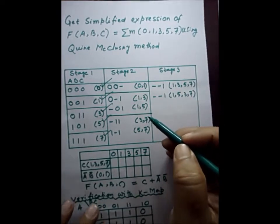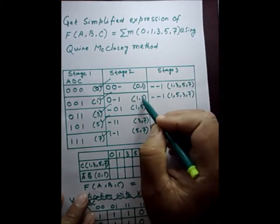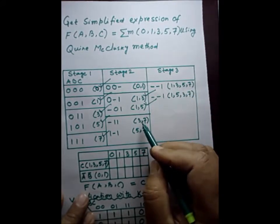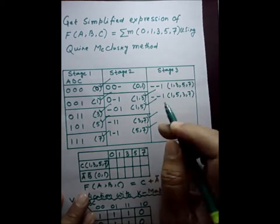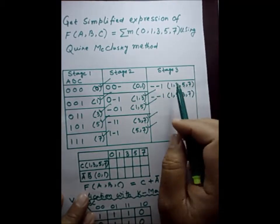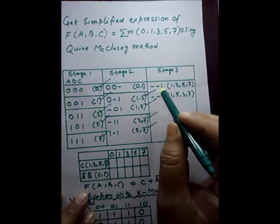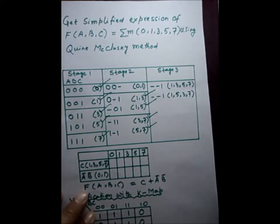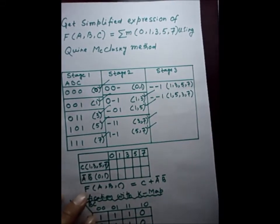Now we check what numbers have been used and tick them. 1, 3 is used — ticked. 1, 5 is there — ticked. 3, 7 is there — ticked. 5, 7 is there — ticked. But 0, 1 is not there — 0, 1 cannot be ticked. That is an important point. The remaining unticked element cannot be ticked because in the third stage only one group is present, so no further fourth group can be produced for mapping. Therefore those remaining unticked elements are called prime implicants.